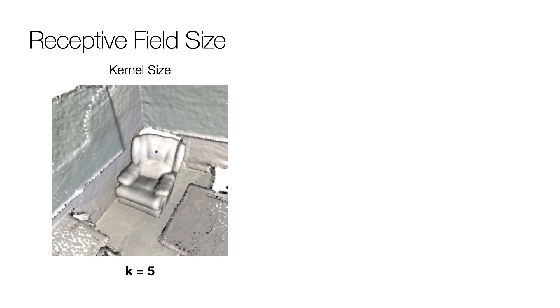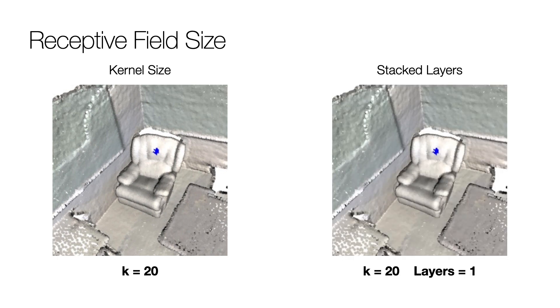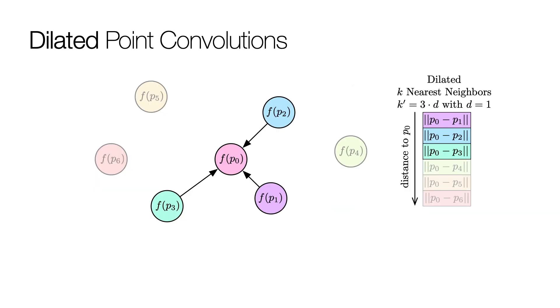The receptive field size is commonly increased by enlarging the kernel size and stacking multiple convolutional layers. Here, we investigate an additional approach, dilated point convolutions.